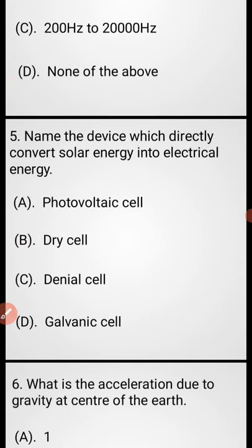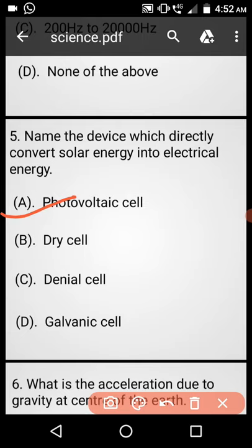Question number 5: Name the device which directly converts solar energy into electrical energy. Option A: Photovoltaic cell, Option B: Dry cell, Option C: Daniel cell, Option D: Galvanic cell. Answer is Option A, photovoltaic cell.